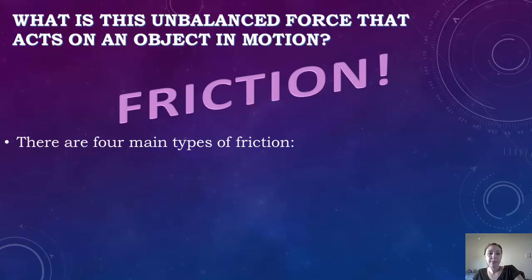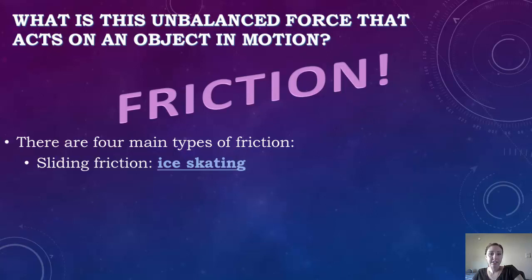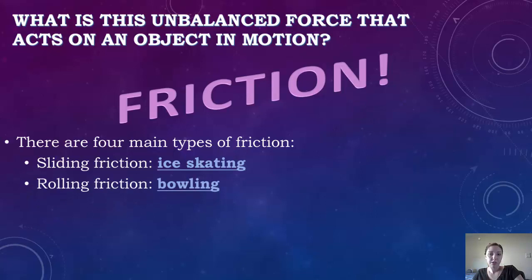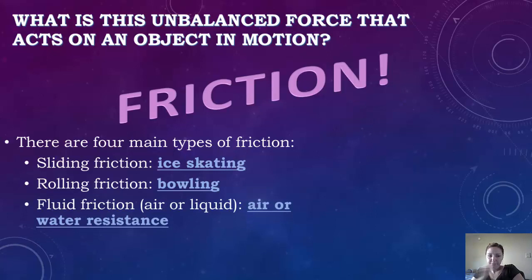There are four main types of friction. When you go bowling and you roll the ball down the alley, the ball rolling on the ground is creating a type of friction. You have fluid friction — which can be either air or liquid — you have rolling friction, and then you have static friction, which is the initial friction when an object is moving.